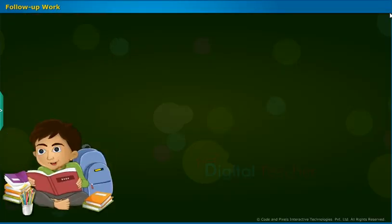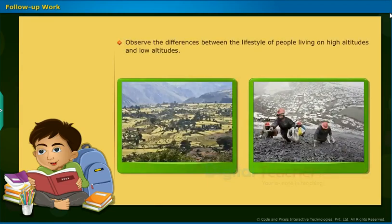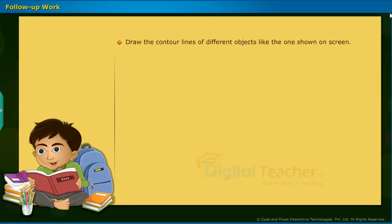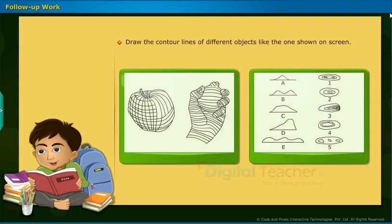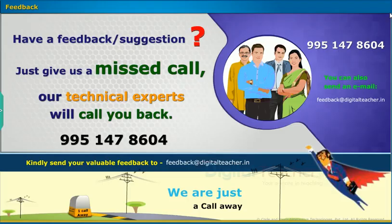Follow-up work: Point out the rivers, railway tracks, and famous temples in each state on an India map and tick the state capitals. Observe the differences between the lifestyle of people living at high altitudes and low altitudes. Draw the contour lines of different objects like the one shown on screen. You have successfully completed the chapter 'Reading Maps of Different Kinds.'